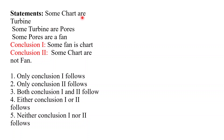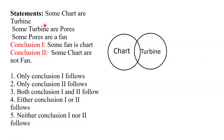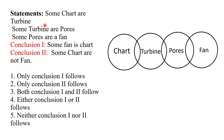The next question is: some chart are turbine — this is chart, this is turbine. Some turbines are pores. Some pores are fan. So this is our diagram. Conclusion one says some fan is a chart — these two are far away from each other and they don't have a direct connection. Conclusion two says some chart are not fan.